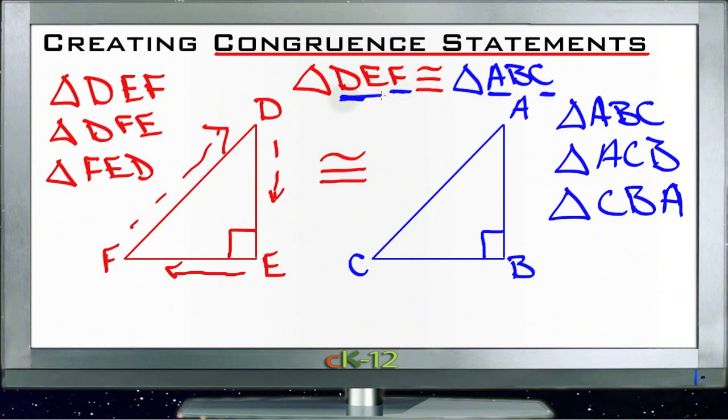It also tells me that side DE, from here to here, corresponds to side AB, the side from here to here. So I know that these two sides are also congruent.